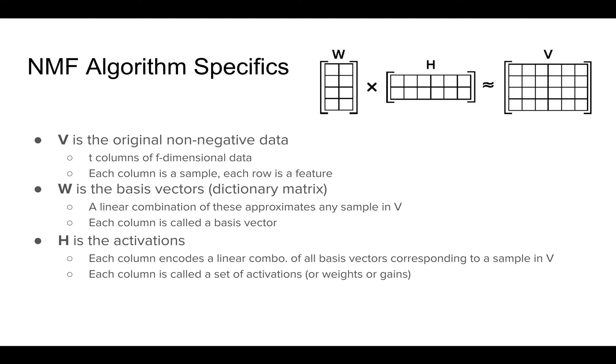So that's fine and dandy, but how does this actually work? Why can these two matrices approximate V? Well, this is how it works. First you have V, which is your original non-negative data. And what it is, is basically a sideways data set of what we're used to dealing with, where the columns are our samples, and then the rows are our features, T columns of F dimensional data.